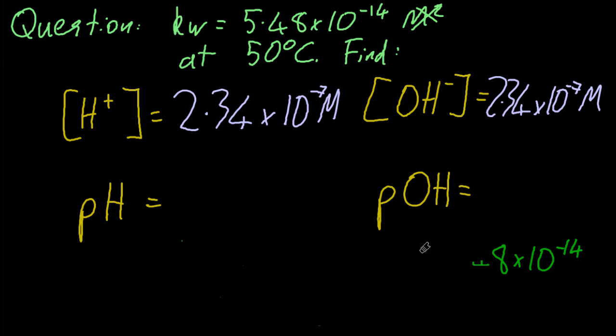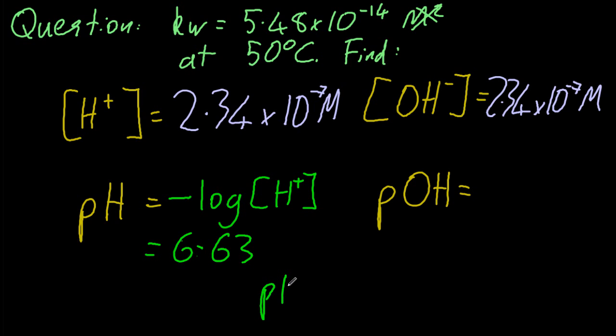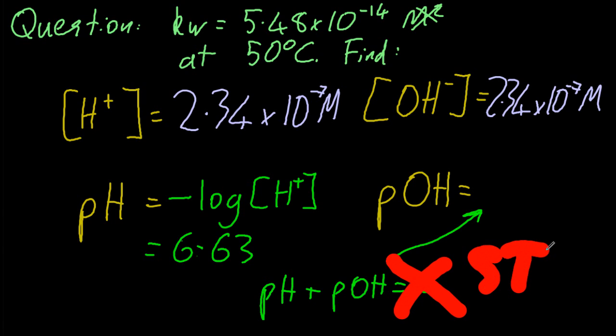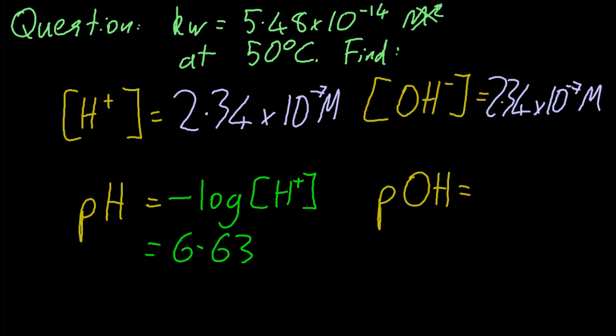So pH is the negative log of the hydrogen ion concentration. And so that gives me 6.63. And you're thinking, oh, that adds up to 14. No, no, no. That's only at STP. It doesn't add up to 14 here. It's not STP. So I'll just do negative log of the hydroxide. That's the same number. No problem.